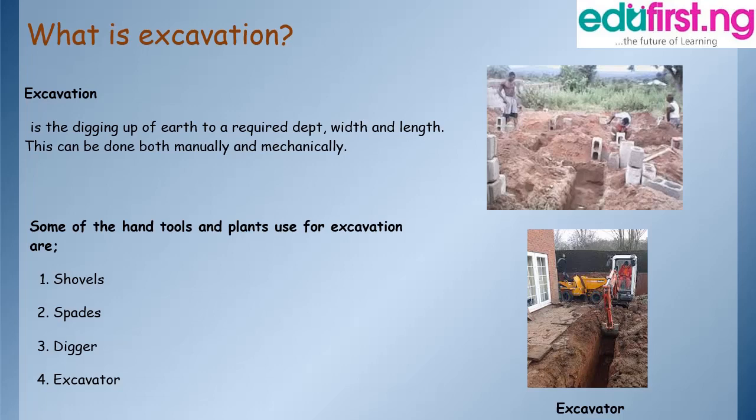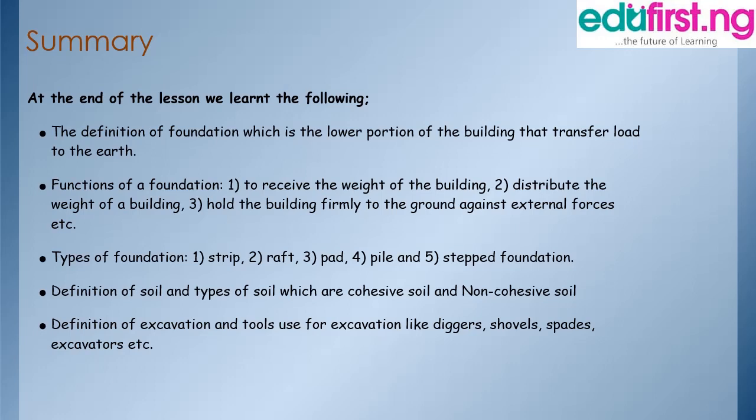We have come to the end of the class. At the end of the lesson we have learned the following: 1. The definition of foundation — the lower portion of a building that transfers load to the earth. 2. The functions of foundation: to receive the weight, distribute the weight, and hold the building firmly against external forces. 3. Types of foundation: strip, raft, pile, pad, and step foundations. 4. The definition of soil and the two types — cohesive and non-cohesive soil. 5. The definition of excavation and the tools used, like digger, shovel, spade, and excavator.